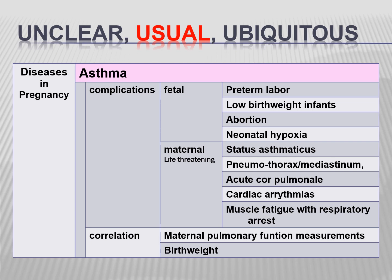Fetal and maternal complications of asthma include preterm labor, low birth weight, abortion, and neonatal hypoxia. Maternal complications include status asthmaticus, hemothorax, cor pulmonale, cardiac arrhythmia, and muscle fatigue due to respiratory arrest.